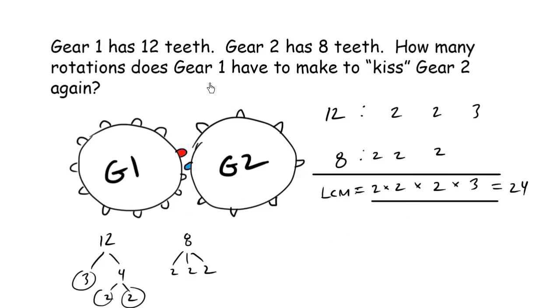But in terms of the number of rotations gear 1 needs to make to kiss gear 2 again, it's going to be 24 divided by the number of teeth that gear 1 has, which is 12. So, the answer is 2.